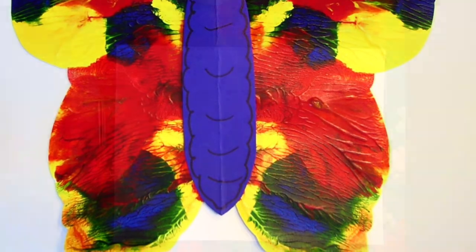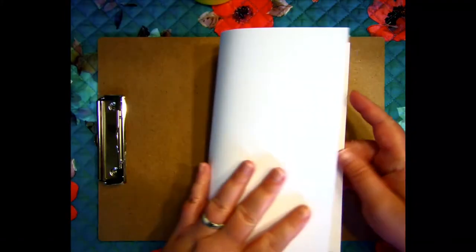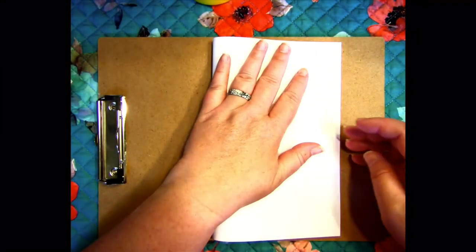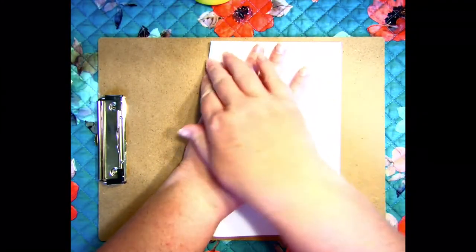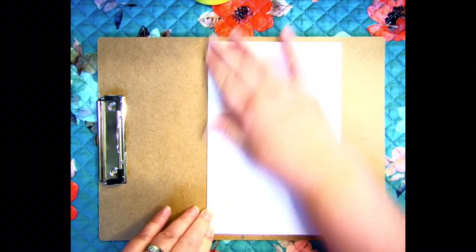In this video, I am going to show you how to create a symmetrical butterfly using paint. For this project, I used acrylic paint and cardstock paper. You can use almost any type of liquid paint, including poster paints or tempera paints. However, watercolors will not work as well.